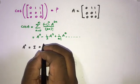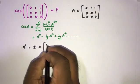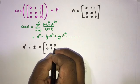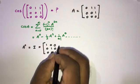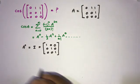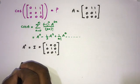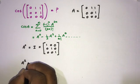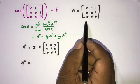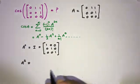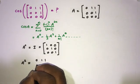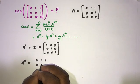We know A raised to the 0 power equals the identity matrix, so that gives us the 3×3 identity: [1,0,0; 0,1,0; 0,0,1]. Now I am going to compute A squared.